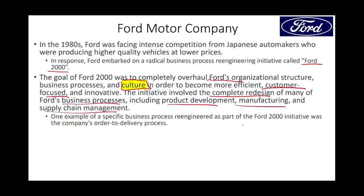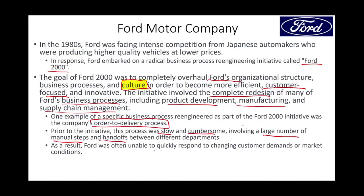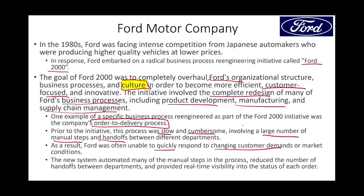One specific example of process re-engineering within the Ford 2000 initiative was the order-to-delivery process. Prior to this initiative, the process was slow and cumbersome, involving a large number of manual steps and handoffs between different departments — much like government bureaucracy. As a result, Ford was often unable to quickly respond to changing customer demand or market conditions. The new automated system reduced the number of manual steps and handoffs between departments, and provided real-time visibility into the status of each order.